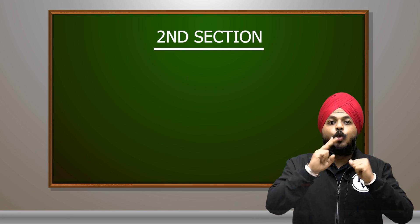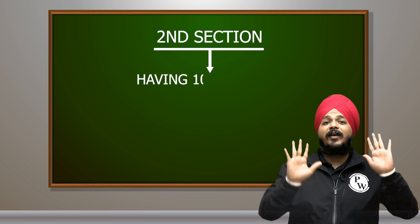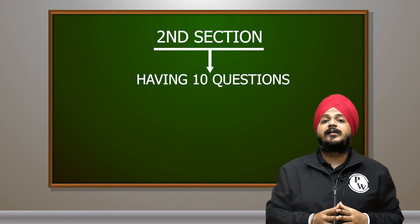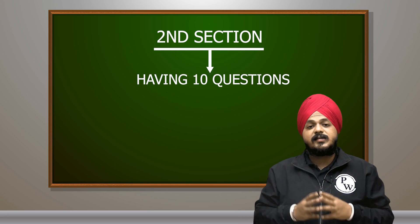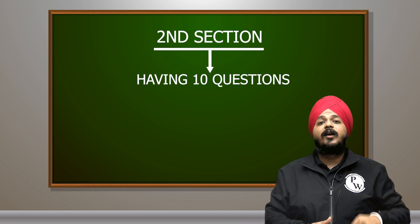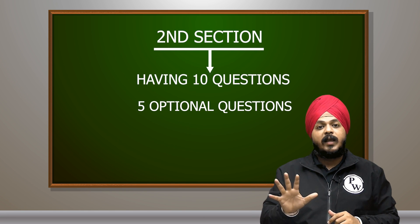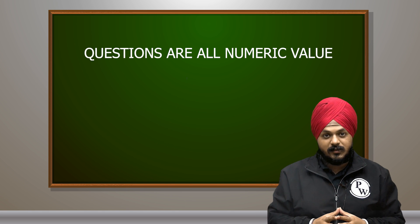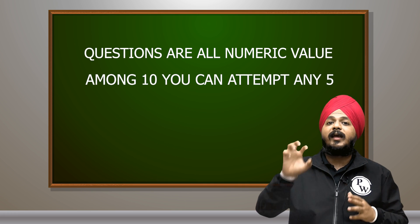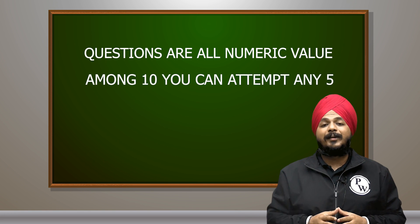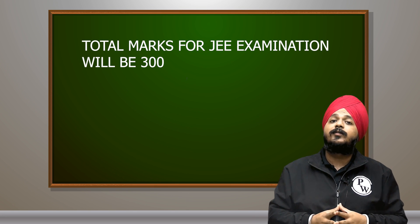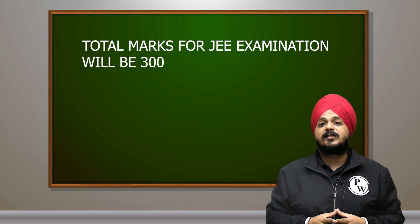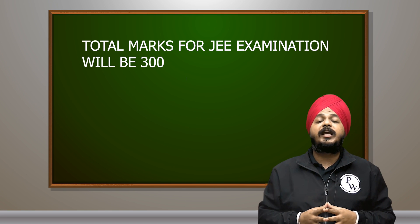Section 2 of the examination has 10 questions. Previously NTA did not give optional questions, but this year there are some pattern changes — Section B has five optional questions. Section B contains questions of numeric value type. Among 10 questions, you can attempt any five. The total marks for JEE Mains examination is 300, and the cutoff changes every year.